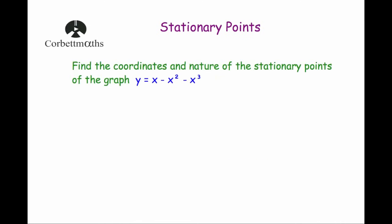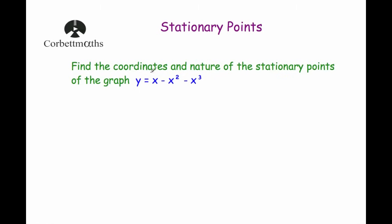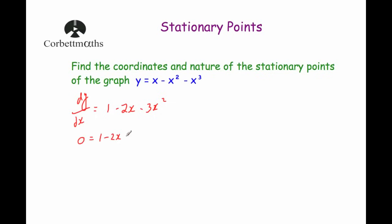Let's look at a typical question where we're asked to find the coordinates and nature of the stationary points. The question says: find the coordinates and nature of the stationary points of the graph y equals x minus x squared minus x cubed. To find the coordinates we differentiate: dy/dx — differentiating x gives 1, differentiating minus x squared gives minus 2x, and differentiating minus x cubed gives minus 3x squared.